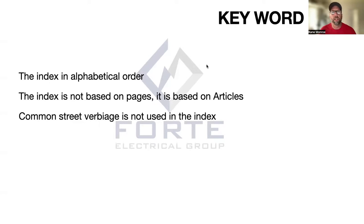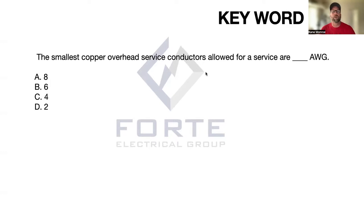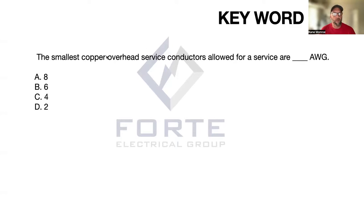The best way to learn this is to just dive right in and get after it. Here's an example question: 'The smallest copper overhead service conductors allowed for a service are blank AWG.' Your options are eight, six, four, and two. When you're reading this, you need to pull out some keywords that they're really asking you. The major keywords here are 'overhead service conductors' and 'copper.'